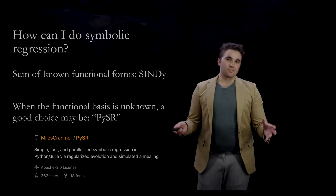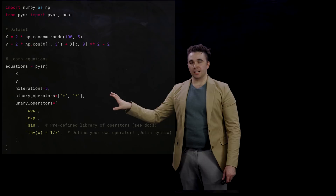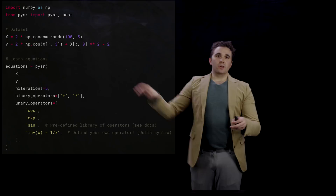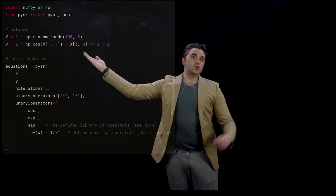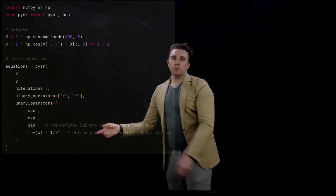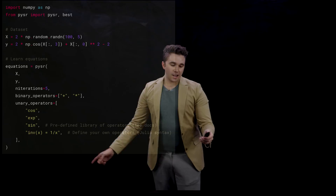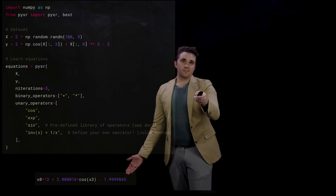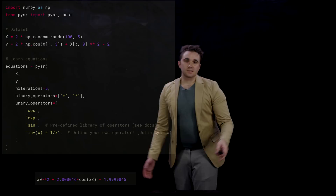PySR is a Python package with a Julia backend. If I have an input dataset with 100 data points and five features, and my true equation is something like 2*cos(x3) + x0² - 2, I put that into PySR, declare what binary and unary operators are allowed, optionally define a custom operator, and let it do the genetic algorithm search. With not many features or operators, it can find the expression in about 10 minutes.